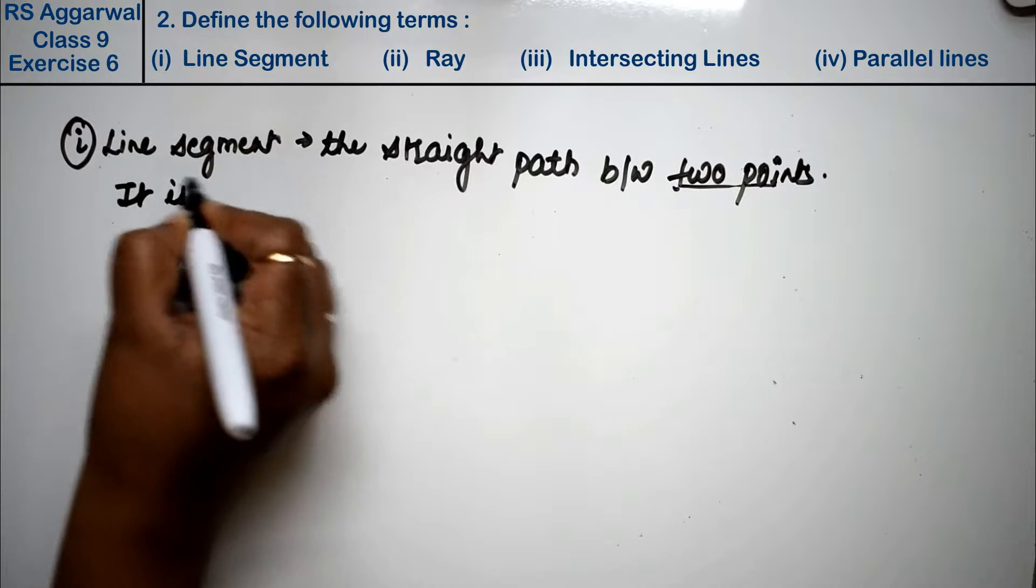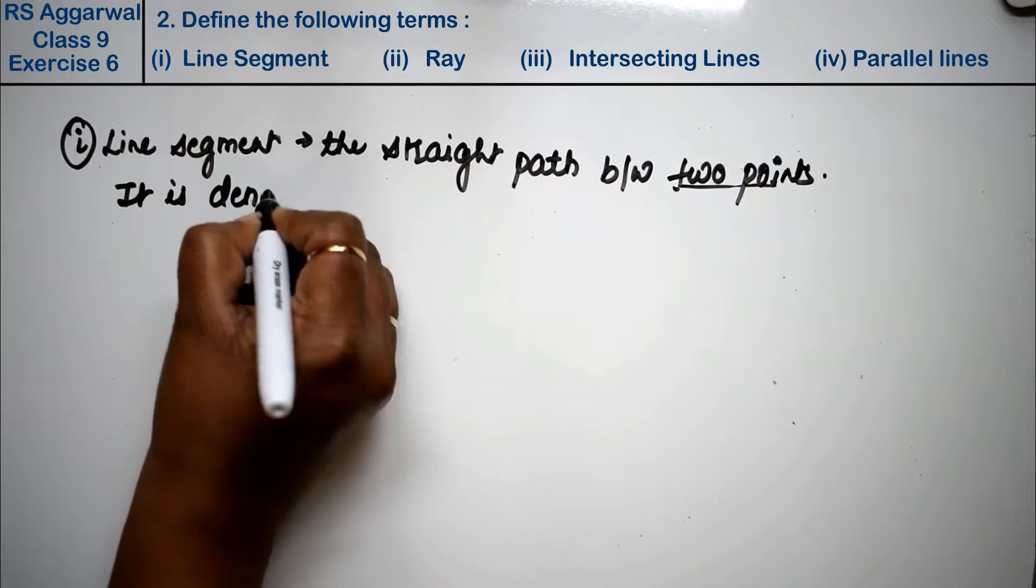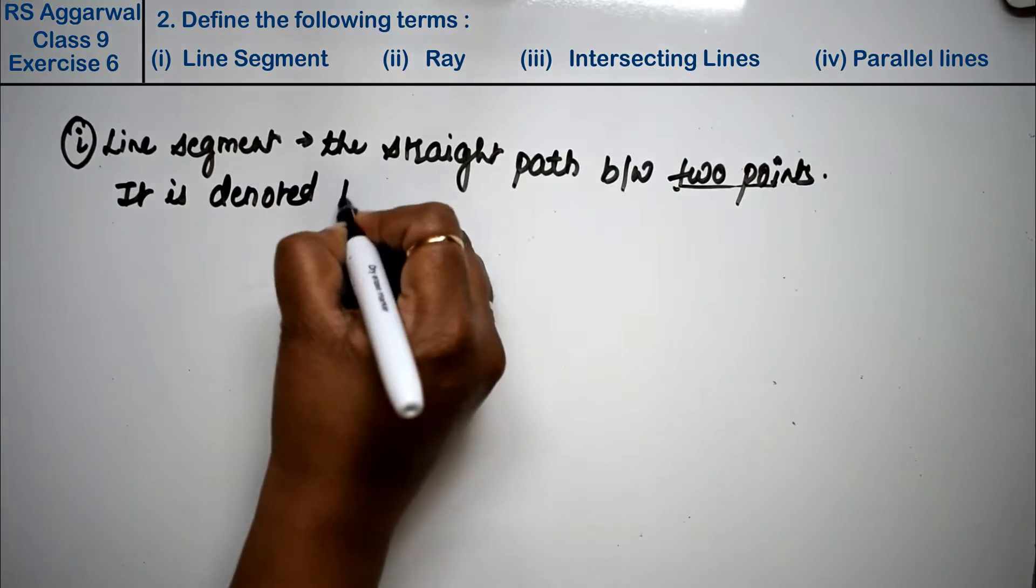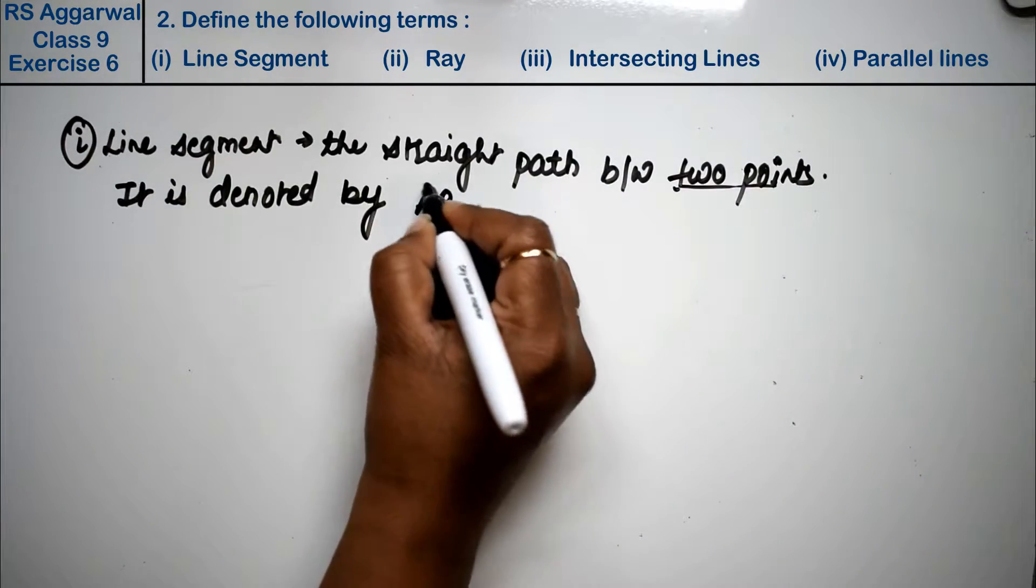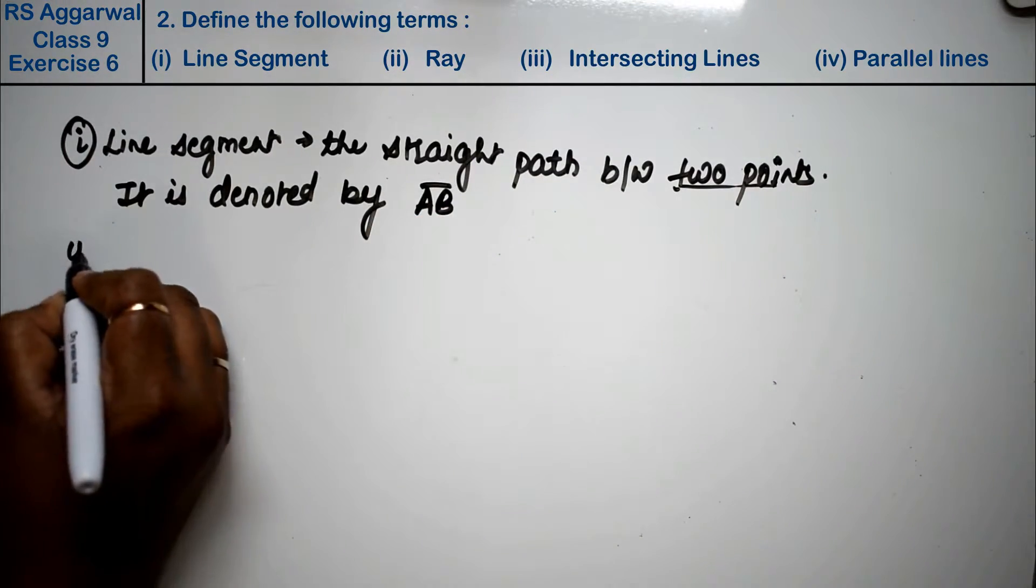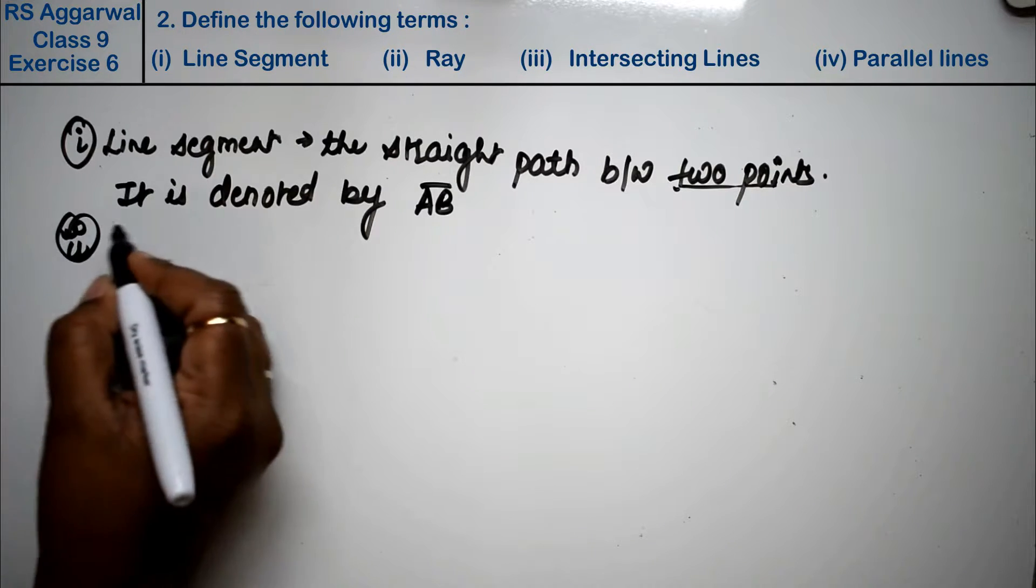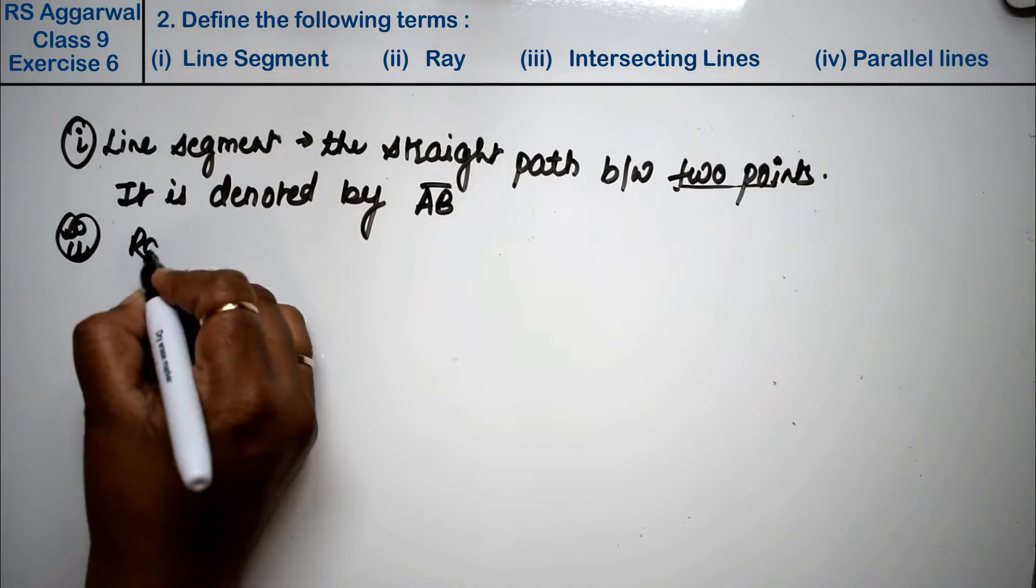It is denoted by alphabet. You can also write the alphabet like this. Second is Ray. Ray kya hoti thi?